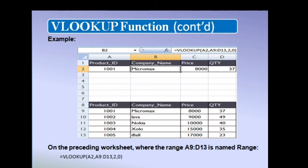After that, if you want to know the company name, mention the number 2 because company name is in the second column. At last, mention 0. It will check the condition, and if it is true, it will show the company name.